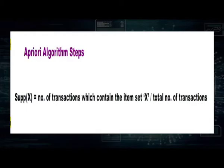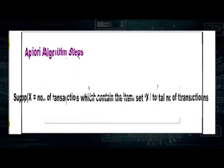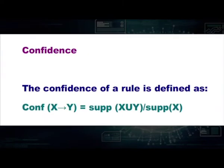Support of X is the number of transactions containing item set X divided by the total number of transactions. The confidence of a rule X → Y is defined as the support of X union Y divided by the support of X, giving an idea of how many transactions contain the frequent item sets.